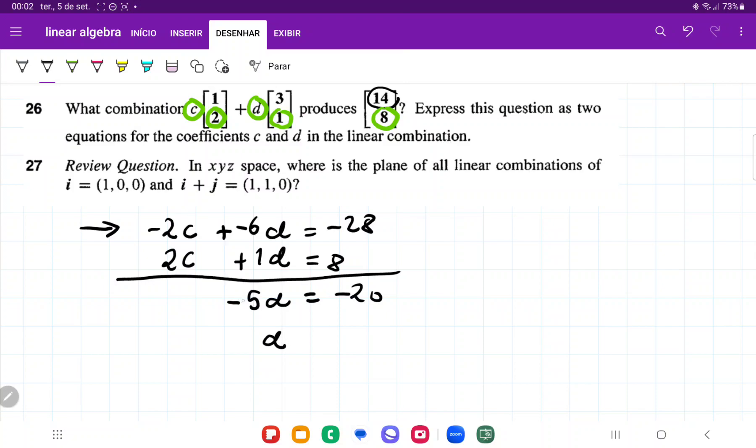So dividing both sides by negative 5 gives us d equals 4.